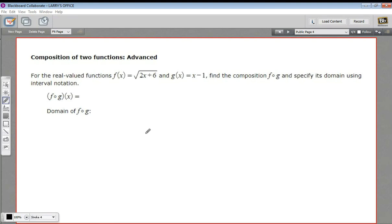In this problem, we are composing two functions. So in this case, we need to find f of g of x, which means we're taking g and putting it inside of f. Here, g is x minus 1, and f is the square root of 2x plus 6. And once we're done composing that, we need to find the domain of our new function.